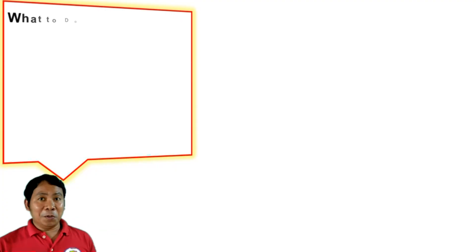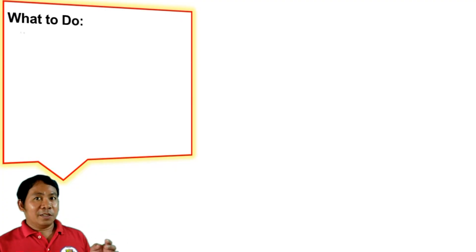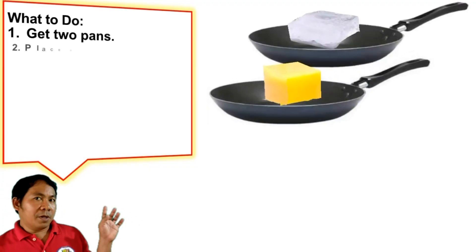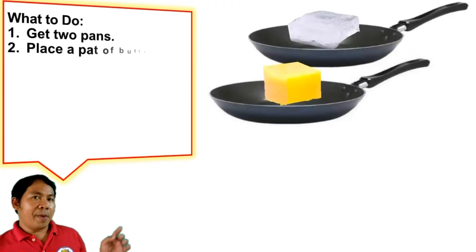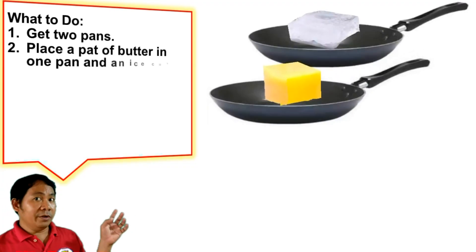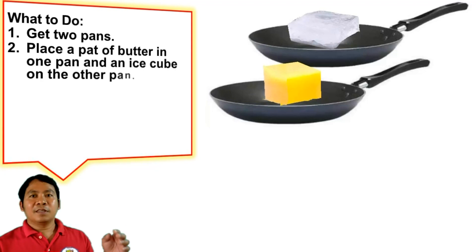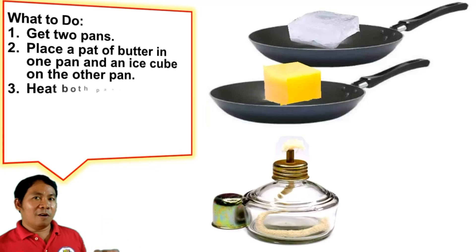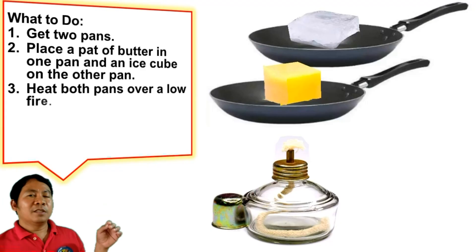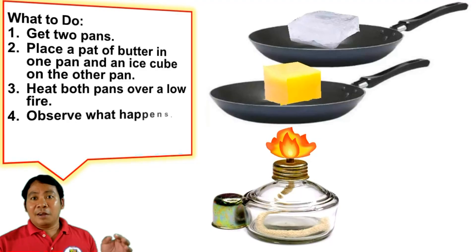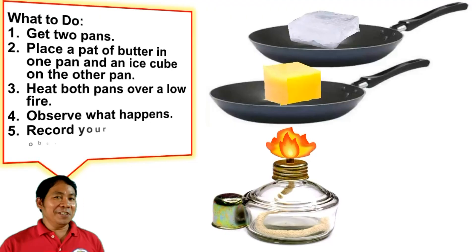What to do: Get two pans. Place a pat of butter in one pan and an ice cube in the other pan. Heat both pans over low fire. Observe what happens and record your observations.